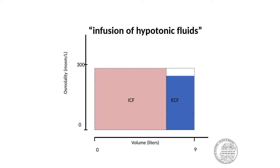Therefore, a gradient exists such that water will flow now from your ECF to the ICF. This will lower down the osmolarity of your intracellular fluid compartment and will increase the volume of the ICF.